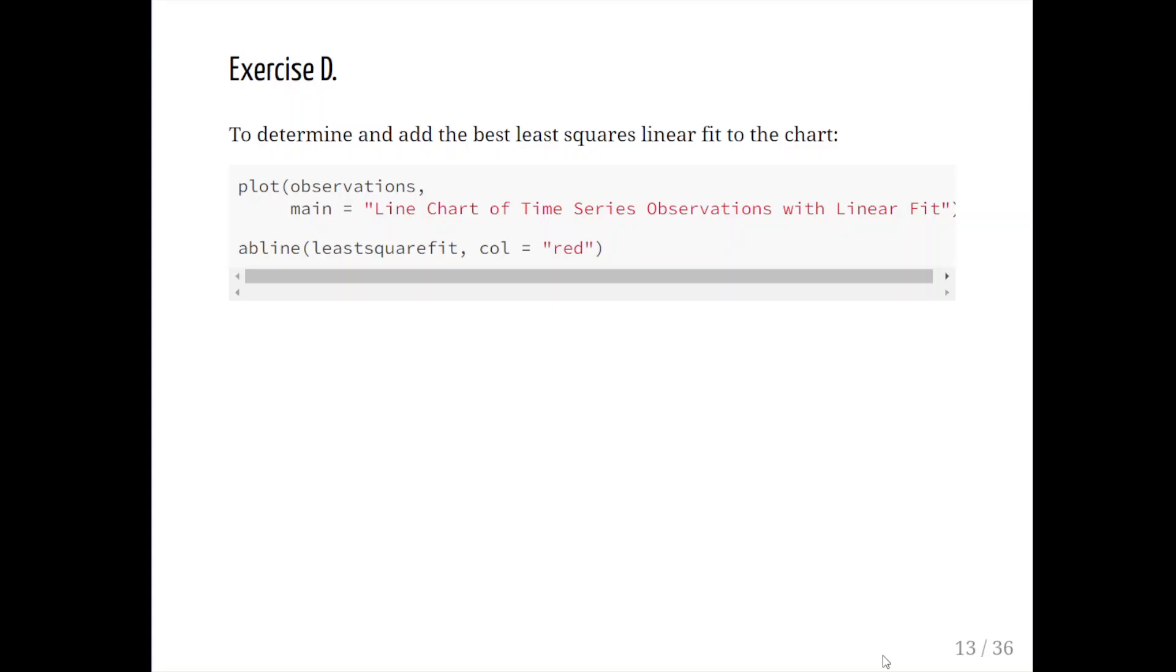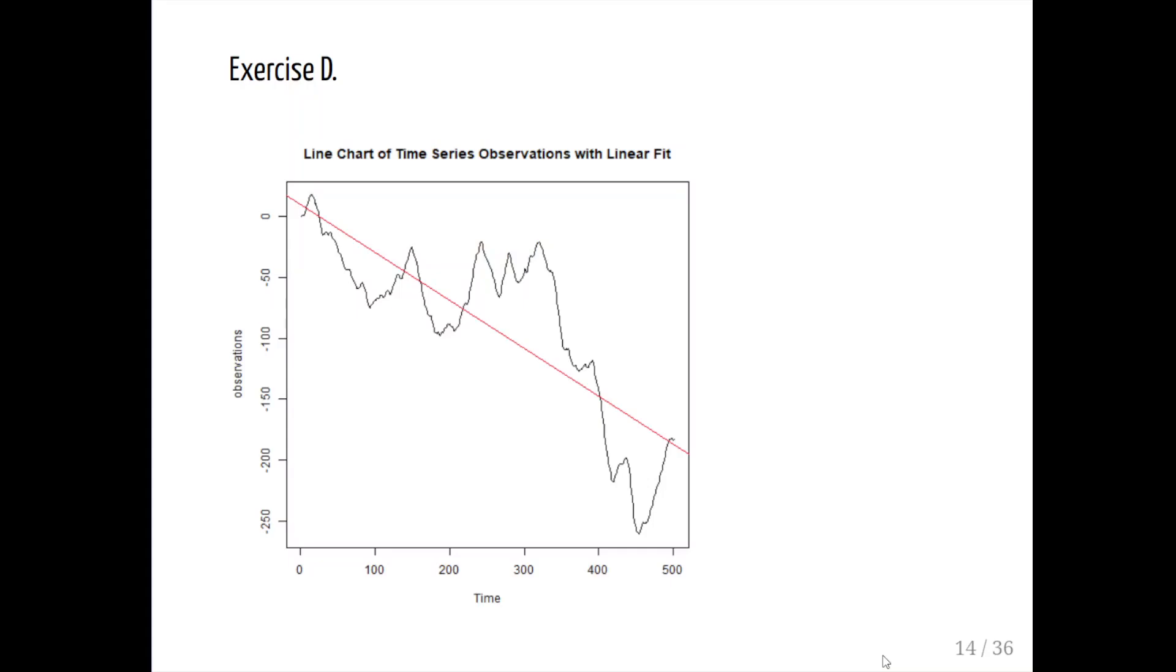Let's use this model fit to add a line to the plot we made previously. The command to add a line to a plot is abline. We can actually just specify the name of the linear model object, which is least squares fit. We could also extract the coefficients, but we can just use this directly: abline(least square fit, color equals red). There we go - very conspicuous downward trend there from top left to bottom right.